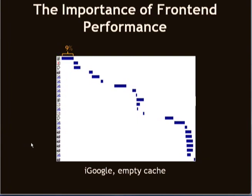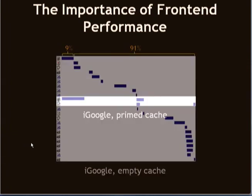That 9% even includes the time for the request to go up to the server, for the server to stitch together the response, and for the HTML document to come back. The other 91% is what I call the front end — it actually does involve network traffic, but it's everything after the HTML document: what did the HTML document dictate the browser had to do, and how quickly did the browser execute that? So for iGoogle with an empty cache, only 9% is spent on the back end and the other 91% on the front end. With a primed cache, it's still pretty lopsided — 17% on the HTML document and 83% on the front end.